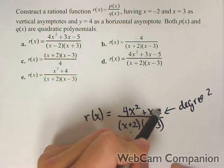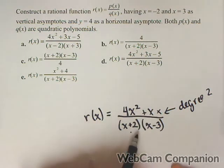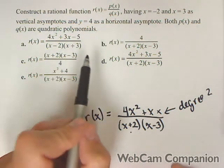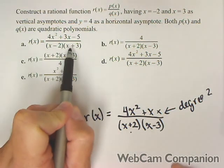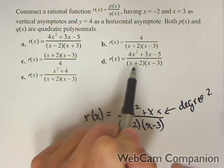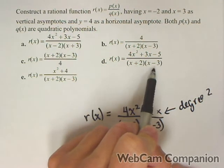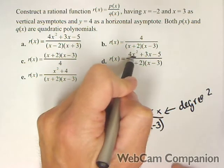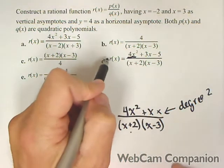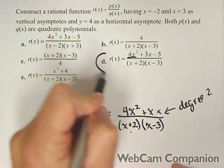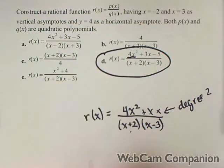It could have other terms here, we don't know, but these are the parts that we need. So A is close, but notice the signs are backwards in the denominator. D has the correct denominator and we have the 4x squared term that we require. So D is our solution.